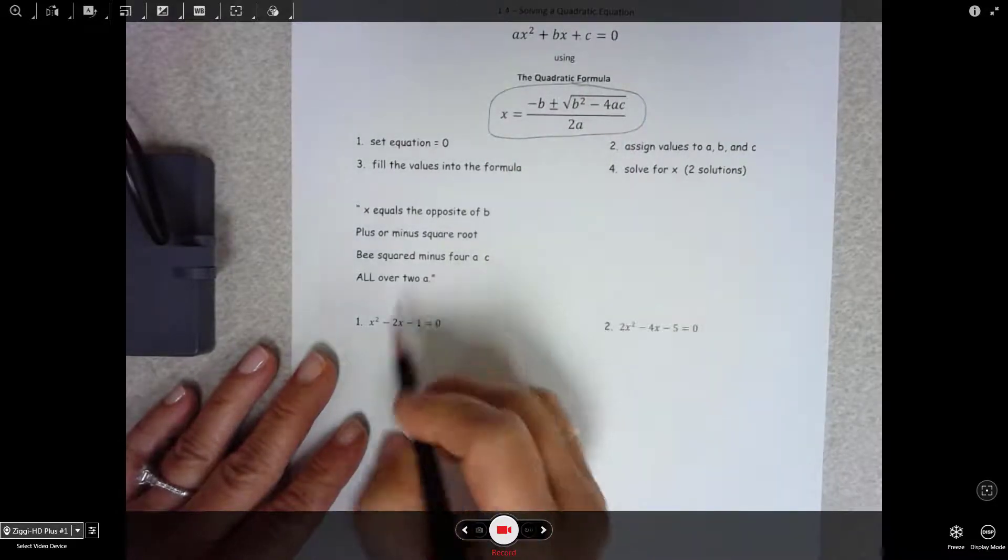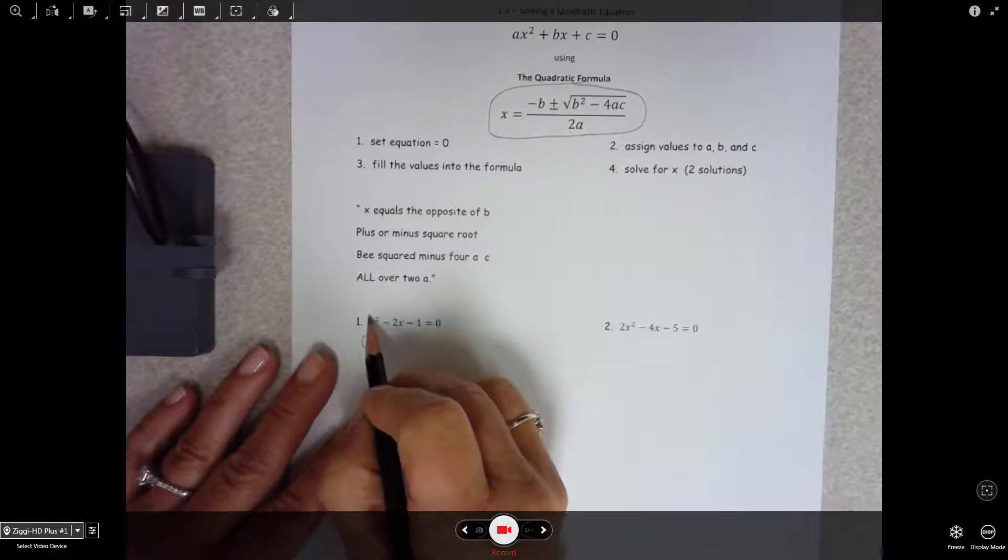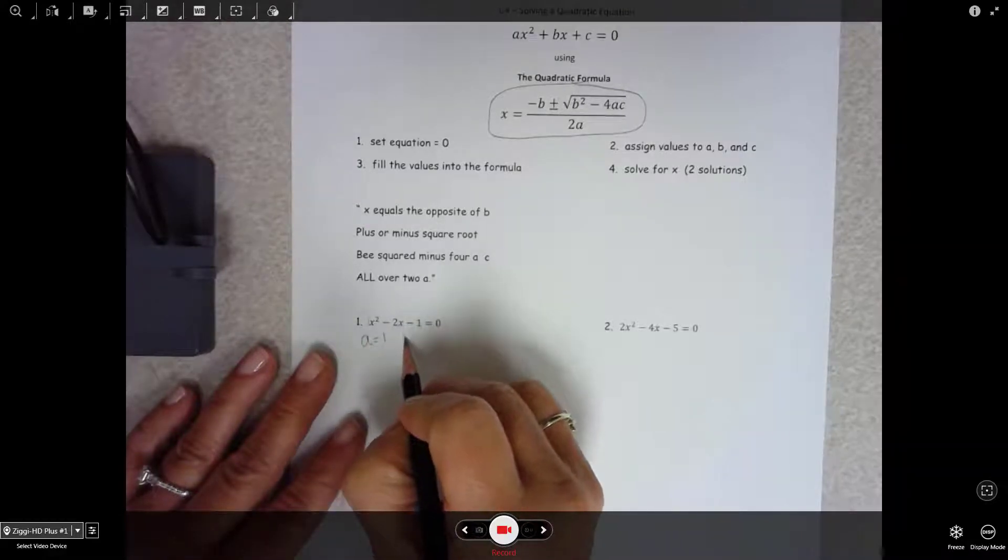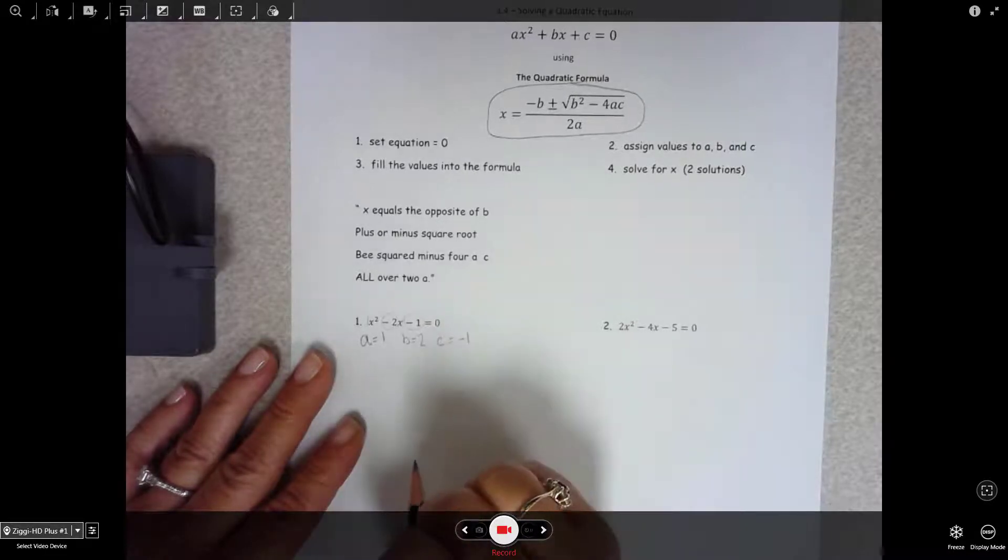Anyway, so you have to learn it. You will not have the formula on a test. A is always the coefficient of your x squared term. B is always the coefficient of your x to the first power. C is always the constant.